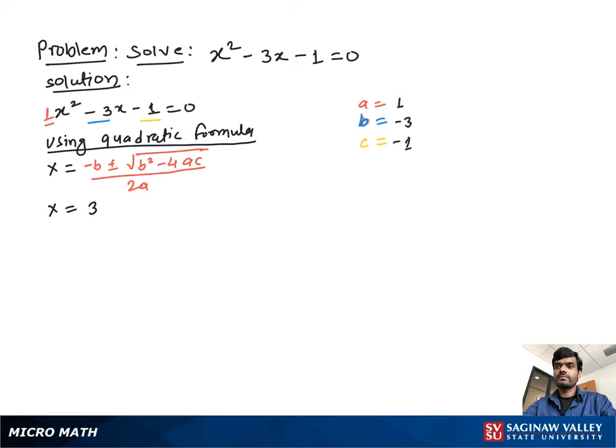Now substituting the value of a, b, c in this equation, we get x is equal to 3 plus minus square root negative 3 square minus 4 times 1 times negative 1 over 2 times 1.